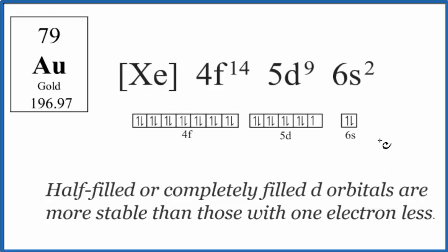Gold would be a lot more stable if we had the 5D orbital here full or half full. So half full would be each one of these blocks has one. Full, each one of these blocks would have two. That's more stable, but we don't have that.